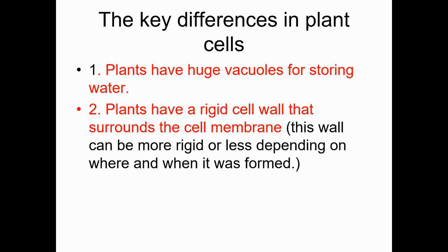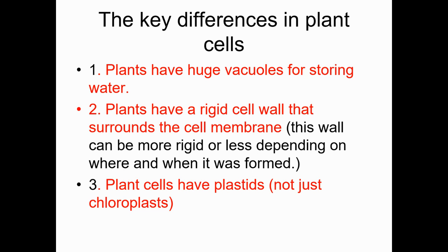The rigid cell wall makes plant cells stack up like little blocks, and it's part of what keeps the plant cell's shape. The water in the vacuoles maintains pressure inside the cell that also keeps that shape, so those two things are working together.